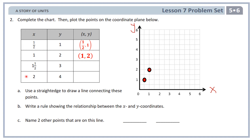Go ahead and plot the remaining 2, and we'll go over them in a bit. So 1 and 1 half comma 3: to plot, I go over 1 and 1 half and up 3 units, right there is that point. Last one, 2 and 4 gives you 2 comma 4. Starting at 0, go over 2 units, go vertically 4 units, right there — you have 2 comma 4. Now, A says use a straight edge to draw a line connecting these points. As you're drawing this line, make sure the line is straight, and that your line also connects to the origin at 0 comma 0, connecting all of those points.